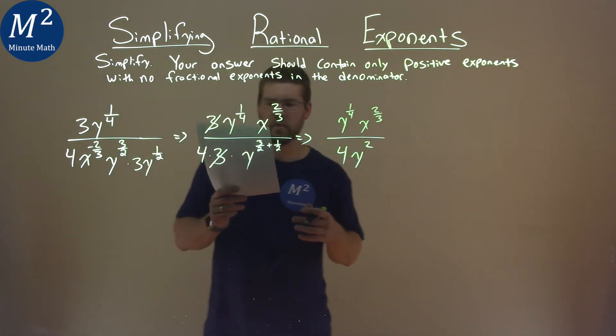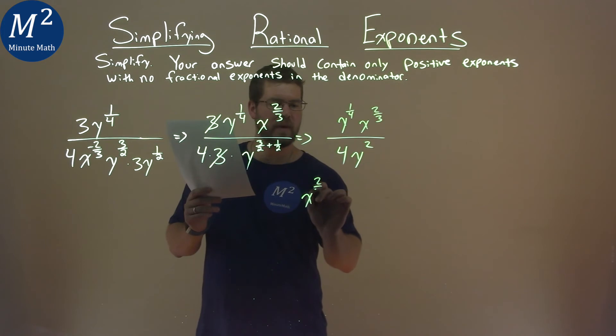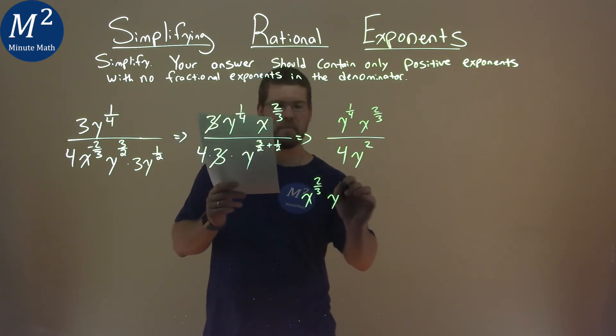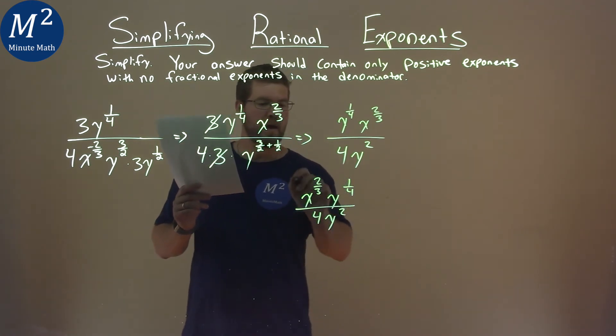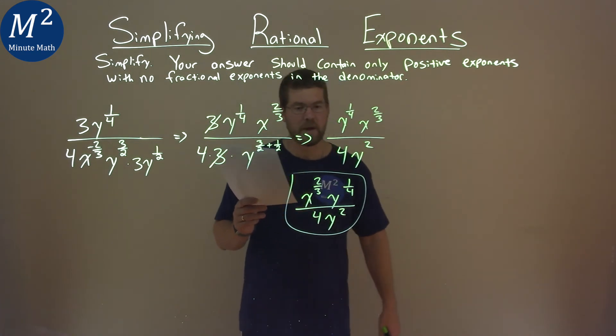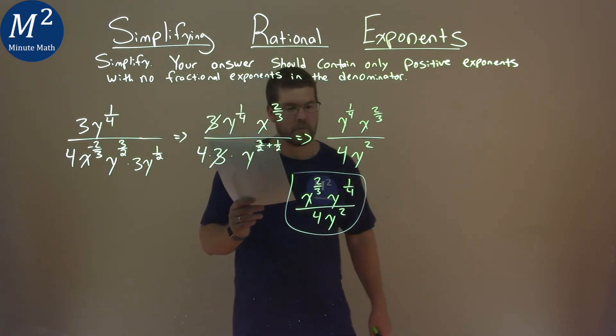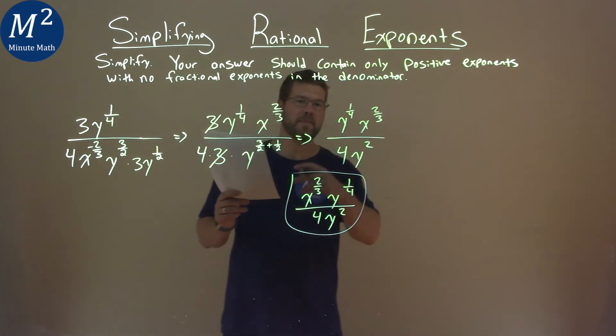Now, sometimes people like to write x first. So I could rewrite this and have x to the 2/3 power and we have y to the 1/4 power. And that's all over 4y squared. And so our final answer here is just x to the 2/3 power times y to the 1/4 power all over 4y squared.